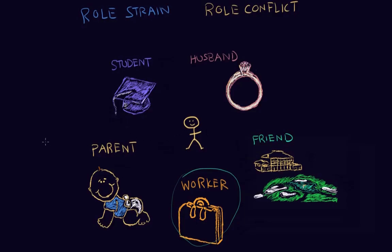So to recap: role strain is the tension between the roles of one single status, like a student, while role conflict involves the conflict between the roles of two or more statuses.